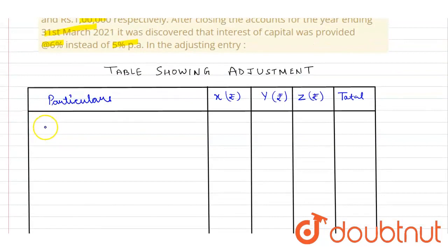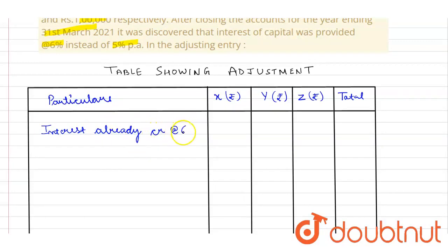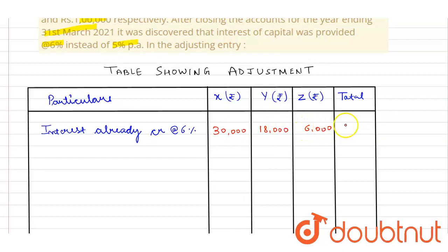Interest which was already credited at the rate of 6% per annum: for X, rupees 30,000; for Y, rupees 18,000; for Z, rupees 6,000; and the total is rupees 54,000.